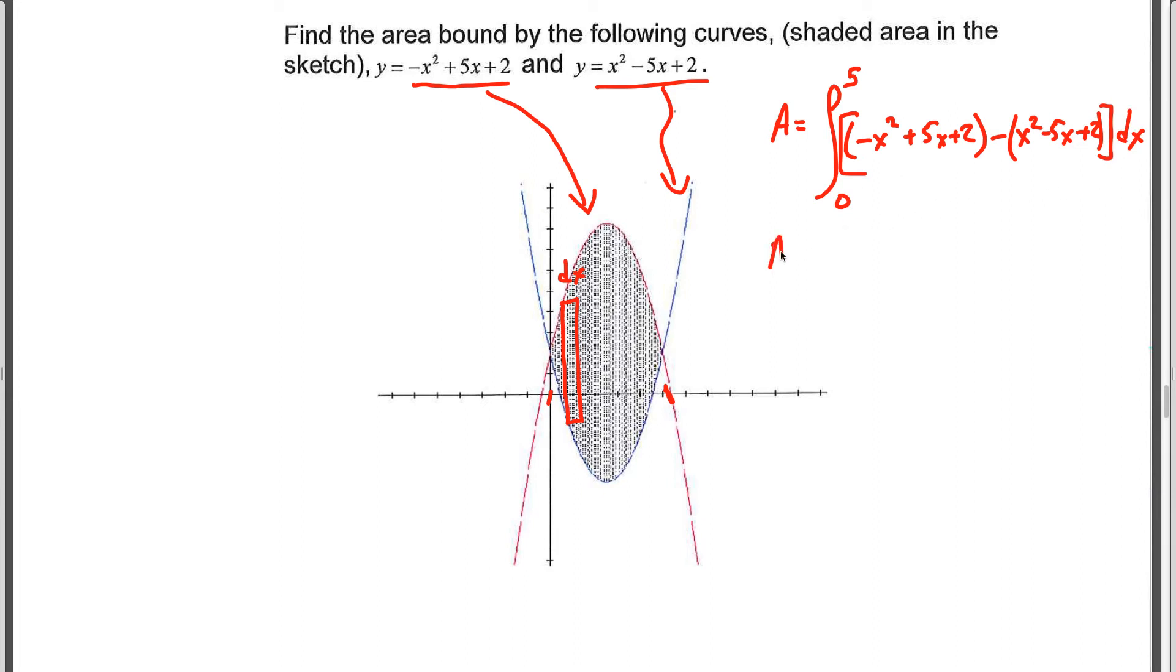If we do some algebra before we integrate, we can save ourselves some work. -2x² + 10x - 5x here becomes... plus 2 minus 2 is 0. So there's the simplified function. Integrating gives us -2x³/3 + 10x²/2, and we need to evaluate from 0 up to 5.